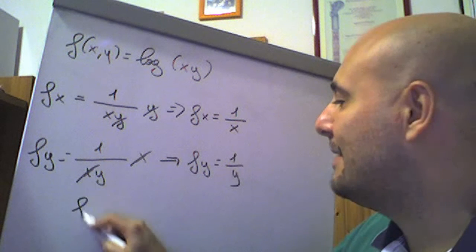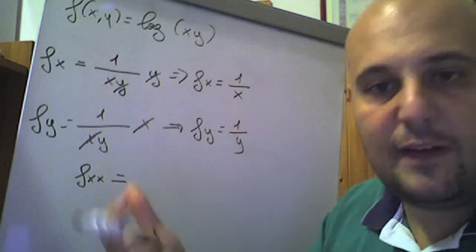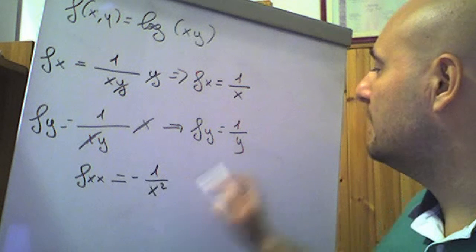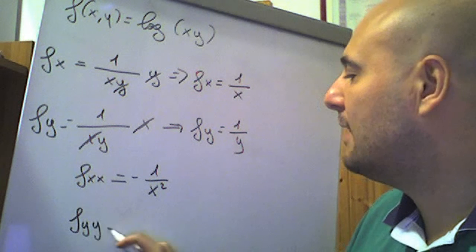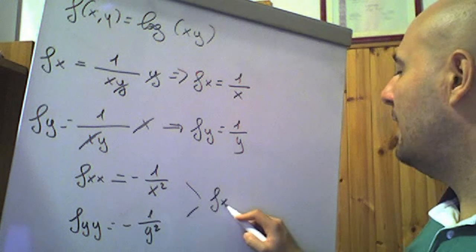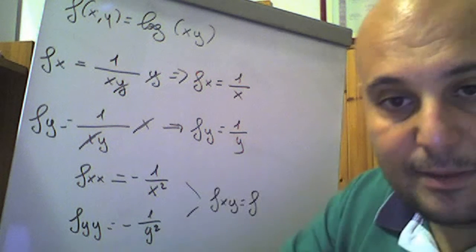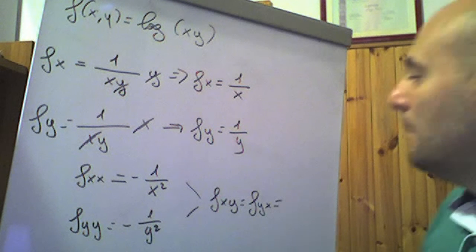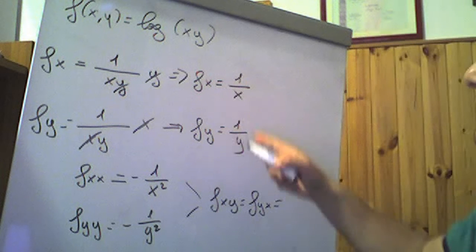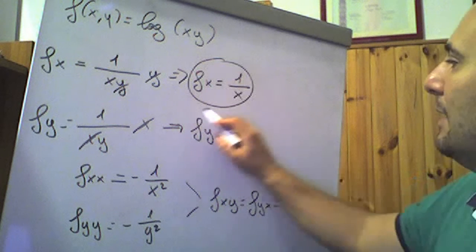Notiamo che se deriviamo parzialmente la seconda volta: la f rispetto ad x derivata ancora rispetto ad x, la derivata di 1/x è meno 1/x². Così come la derivata parziale seconda della f rispetto ad y fatta ancora rispetto ad y sarà meno 1/y². Le miste invece sono zero: la f rispetto ad x derivata rispetto ad y non contiene la y, quindi è una costante, e viceversa. Eccole tutte le derivate parziali di questa funzione.